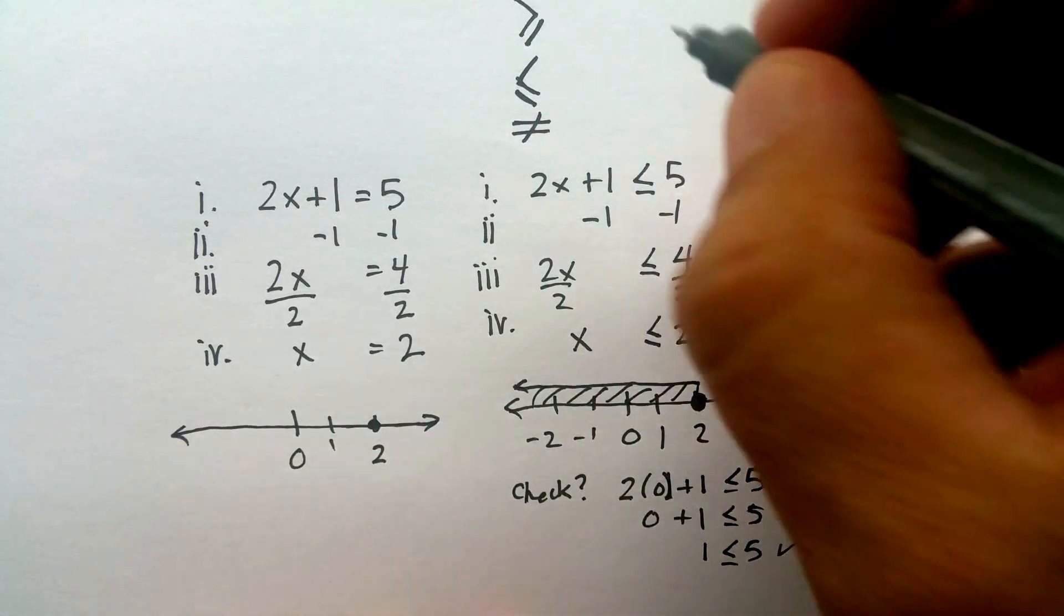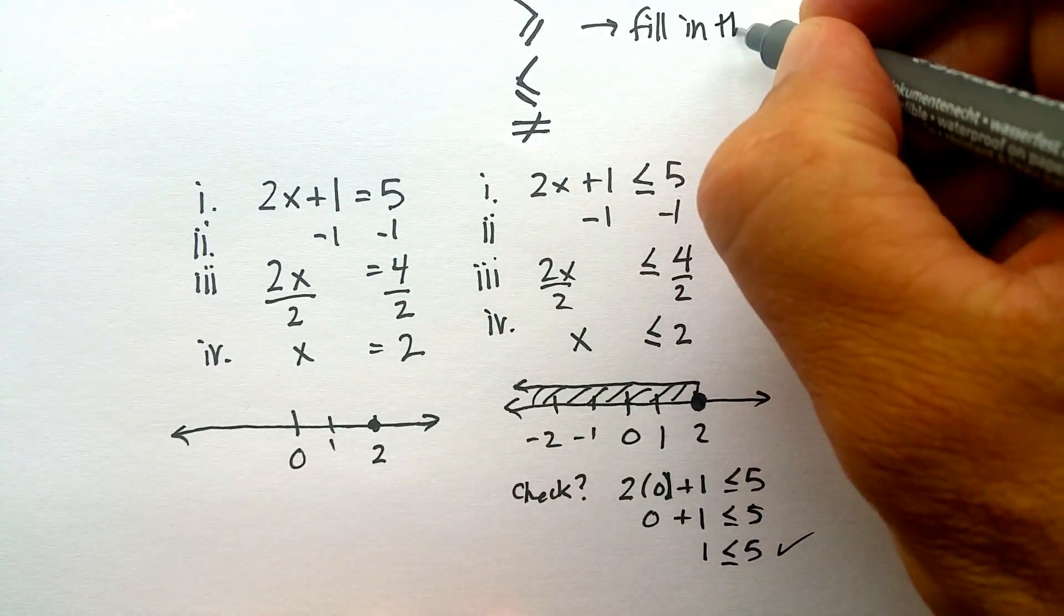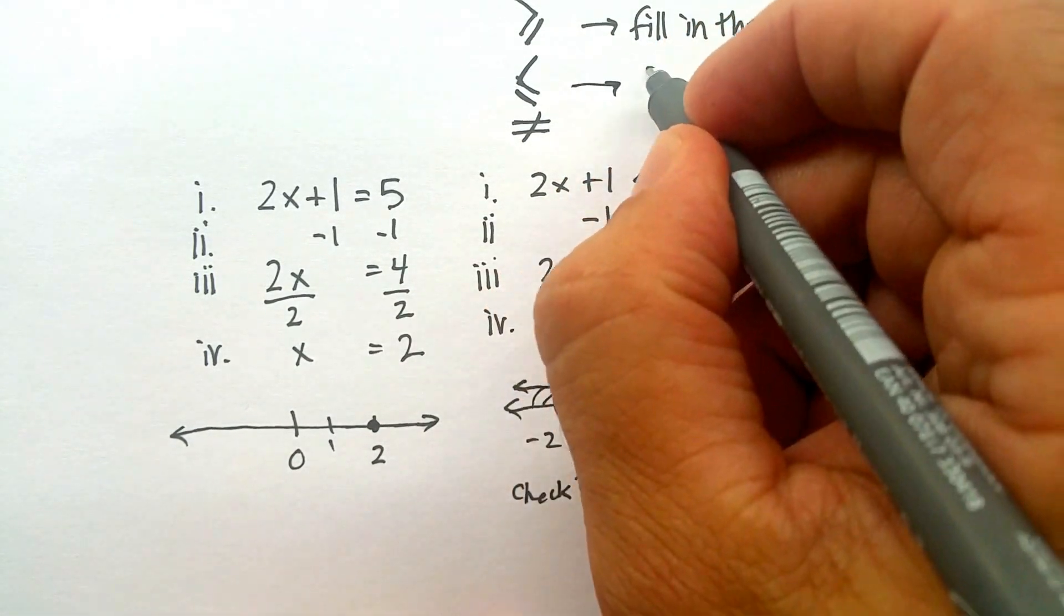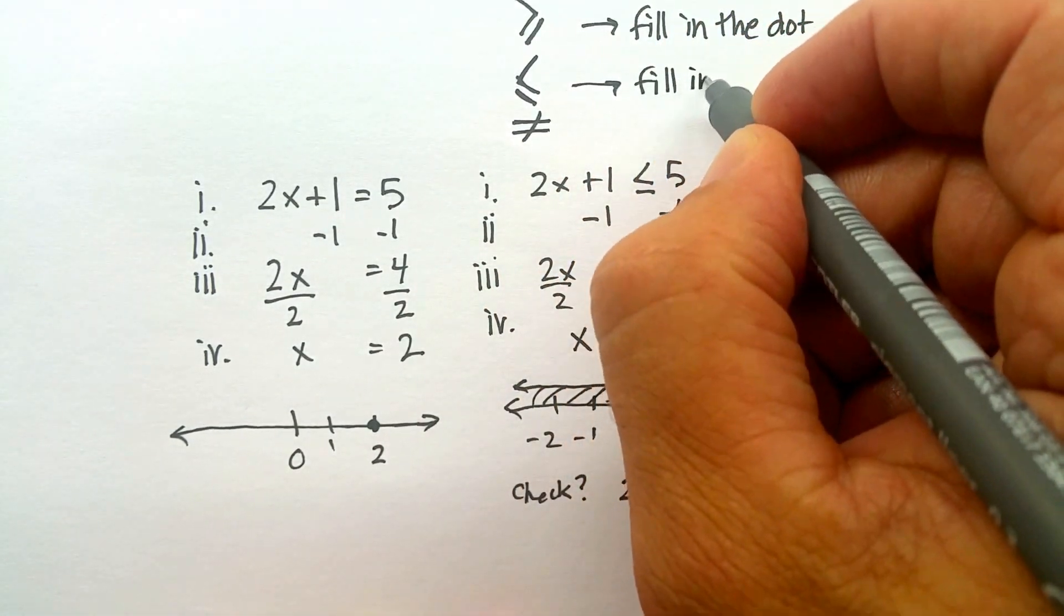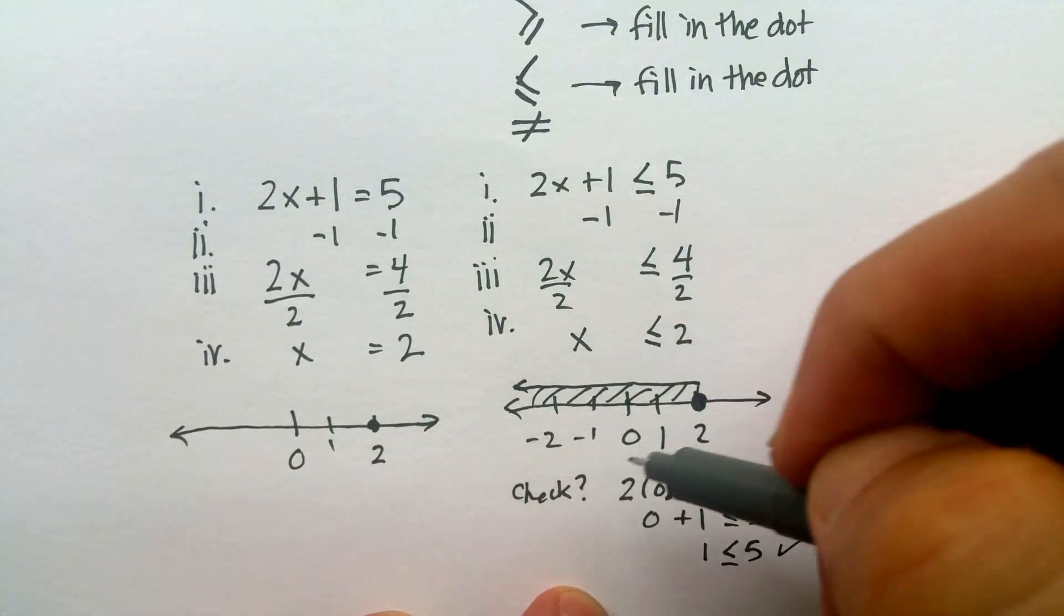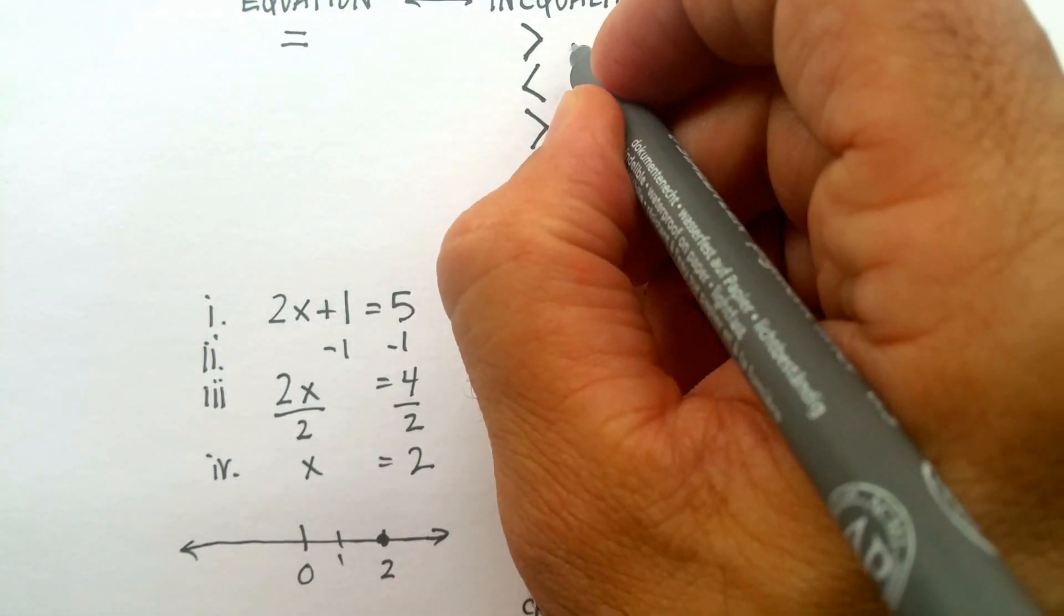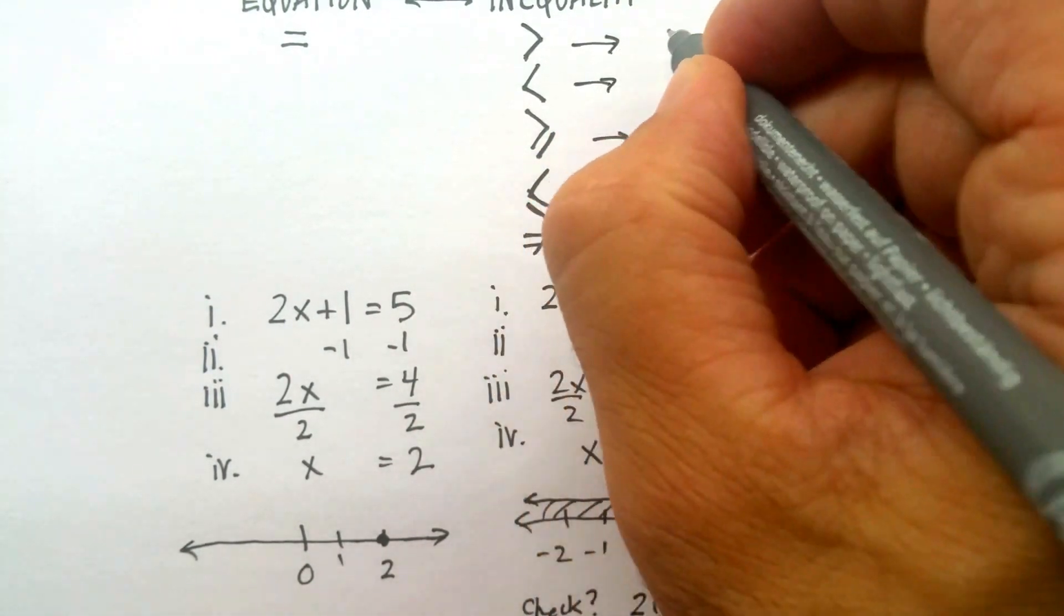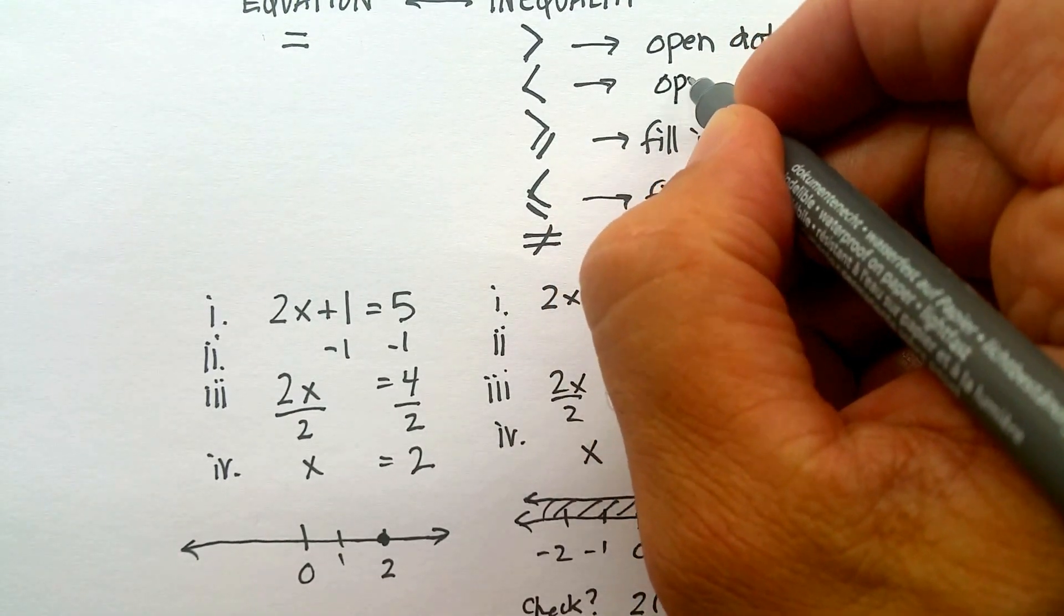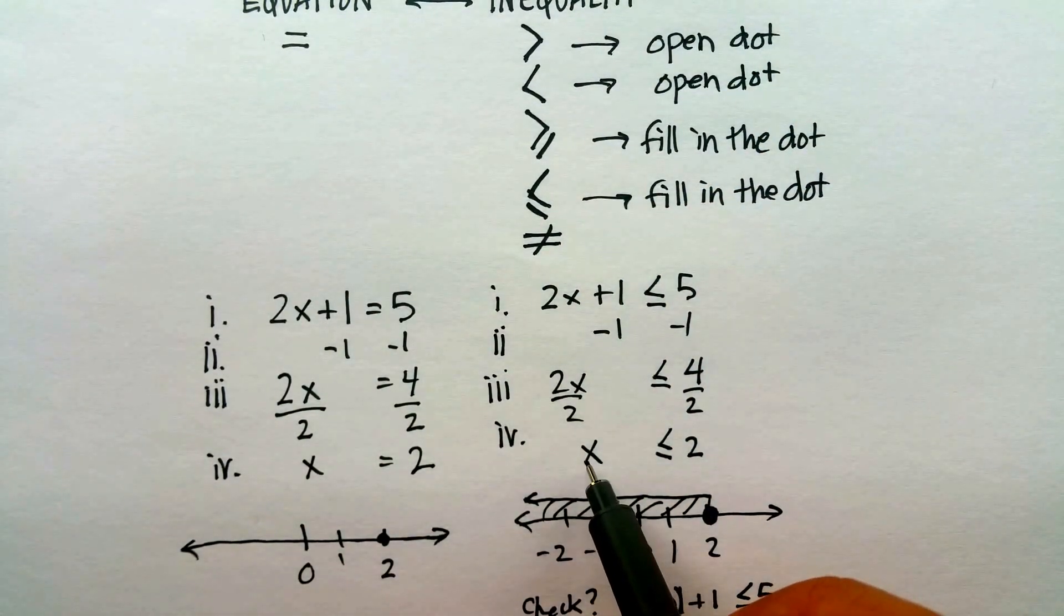Okay, now when it has an equal sign, you fill in the dot on the number line if you needed to graph it - and this is also called graphing, by the way. When it's an inequality like this without an equal sign, you leave the dot open - open dot.